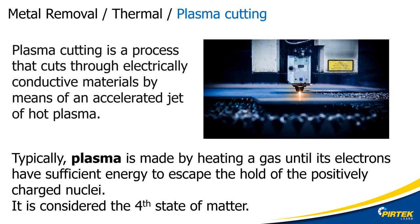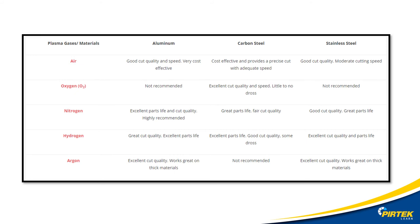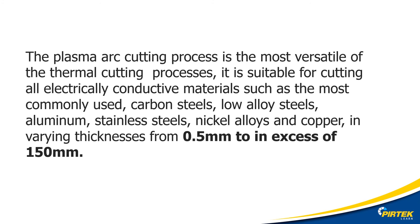Plasma cutting is a process that cuts through electrically conductive materials by means of an accelerated jet of hot plasma. We can liken plasma to a wire carrying electricity — in the case of plasma, it's a gas conducting electricity. Typical materials cut with a plasma torch include steel, stainless steel, aluminium, brass and copper, although other conductive metals can be cut as well. The gas commonly used with plasma cutters is compressed air; sometimes nitrogen, hydrogen and argon are used for specific applications. Plasma cutters can cut from half a millimetre to 150mm thick material and are usually rated by the thickness of material they can cut and the size of material that can sit on their bed.